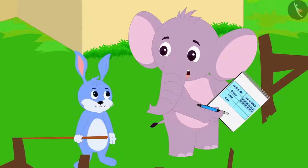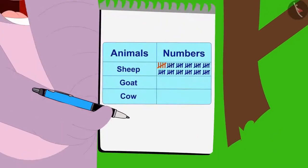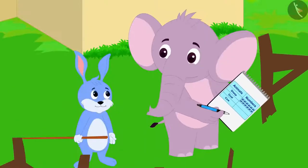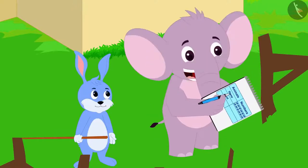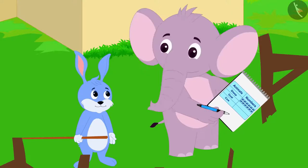Appu said, Bunny, I finished counting all my sheep very quickly. But now I see only groups of five tally marks. How will I know what the total number of sheep is?